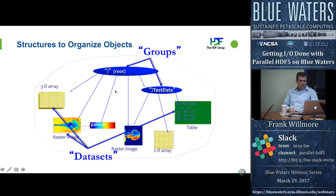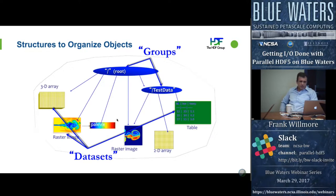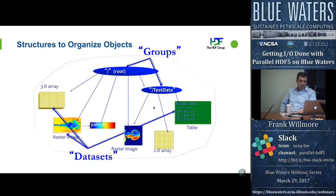Every HDF5 file has a root group — just a slash, using Unix filesystem parlance. If you're familiar with working with a Unix filesystem, you'll have no trouble working with HDF5 groups. You basically build a tree at whatever level of complexity is relevant to you, within a file. You can also mount other HDF5 files as filesystems on top of a given mount point within an HDF5 file. There are lots of features and flexibility, but you don't need to know about all of them.